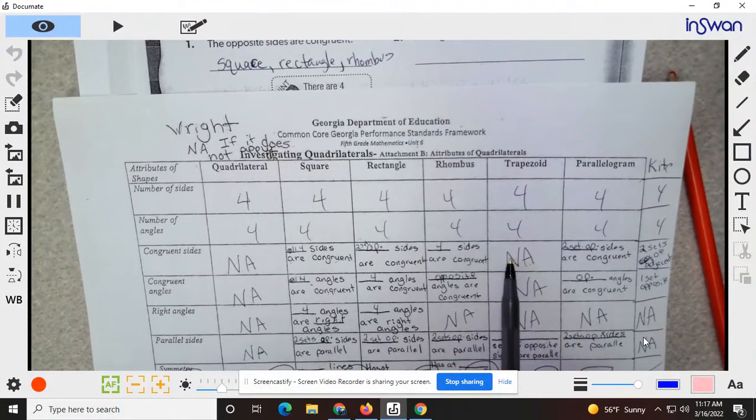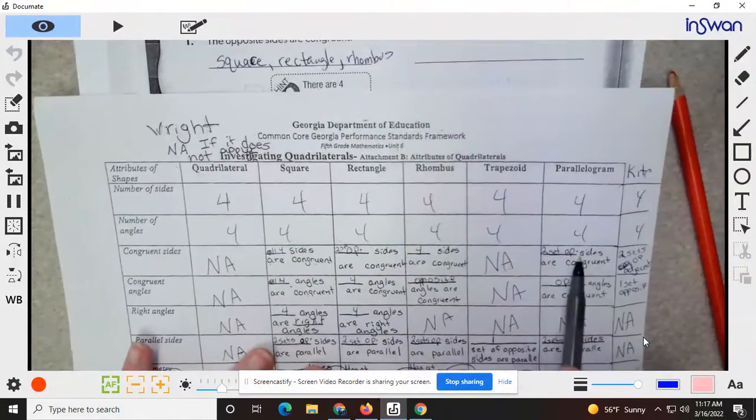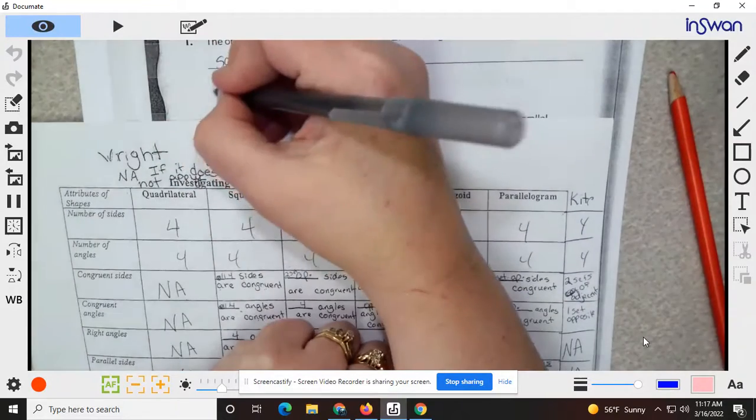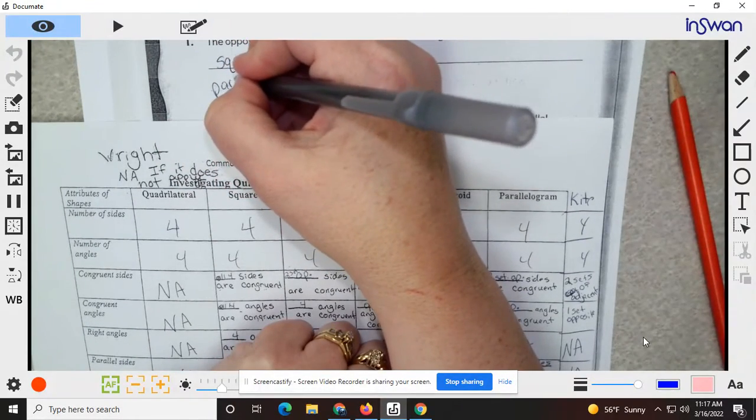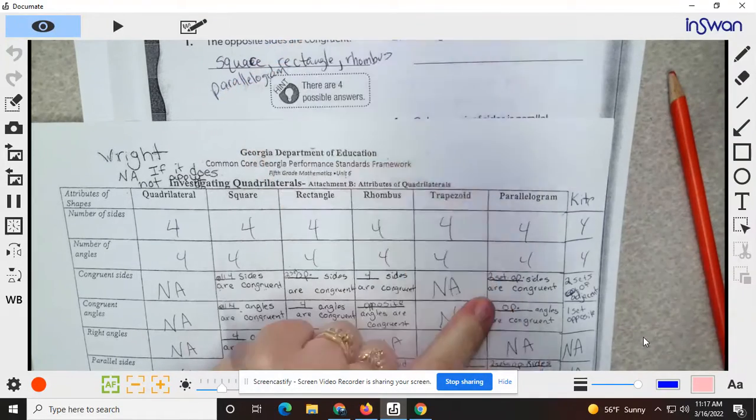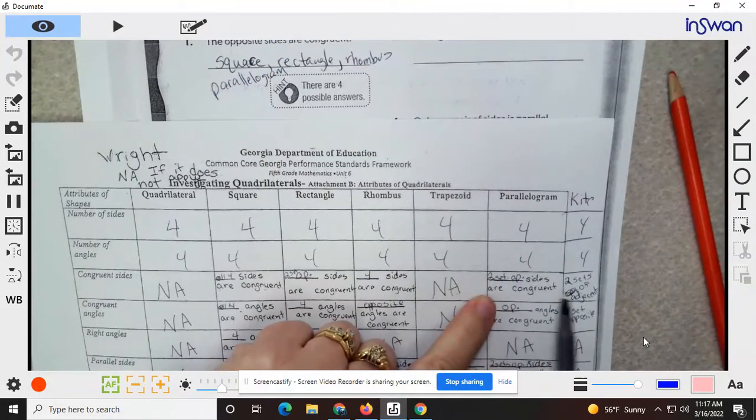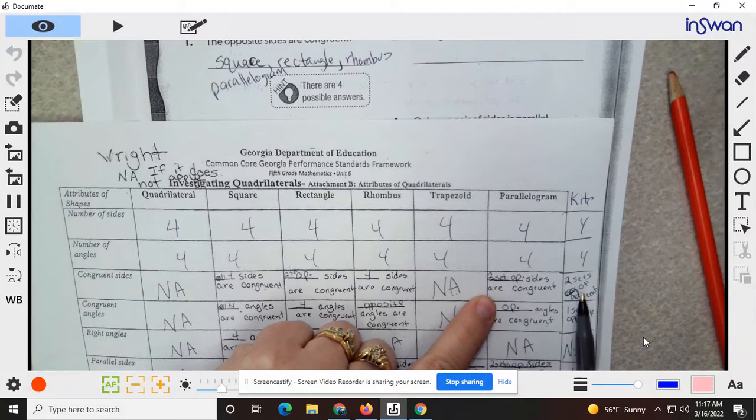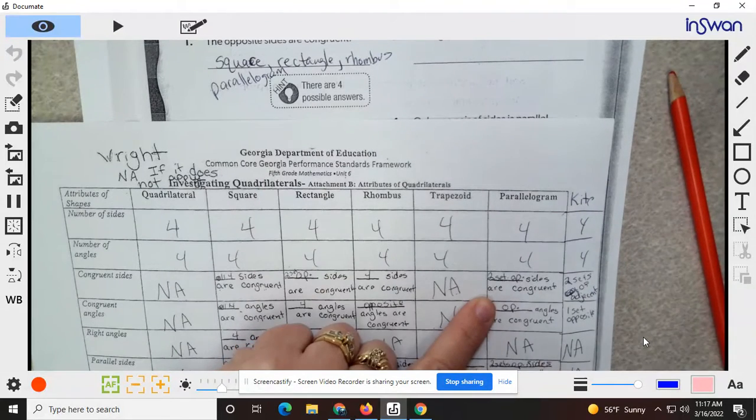Trapezoid, no. Two sets of opposite sides congruent, and two sets of adjacent. So that's opposite. So no.